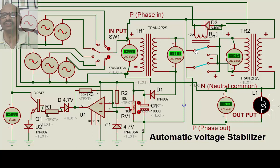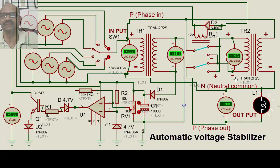When the input reaches a certain level, the relay changes from this position to this position. Now positive goes to positive — meaning the secondary voltage is subtracted. 223 V minus 14.3 V gives about 208 V. This is how the buck operation takes place.